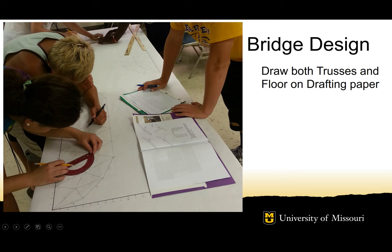This team of students is drawing their bridge trusses — there are two trusses holding the bridge on either side of the floor. I recommend you draw the truss twice: one truss here and one truss deeper on the sheet. This allows you to construct one bridge on each drawing so you don't have to wait for one to dry and risk it getting glued to the paper. You should also draw the floor beams and floor on the paper, which I'll show in future images.